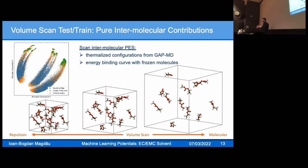In order to investigate this further, we developed a test I call the volume scan test, which shows the pure intermolecular contributions to the potential energy surface. We start with thermalized configurations from GAP-MD, and we both expand the box towards the free molecule regime and compress the box towards the highly repulsive regime when molecules come together and Pauli repulsion plays a role.